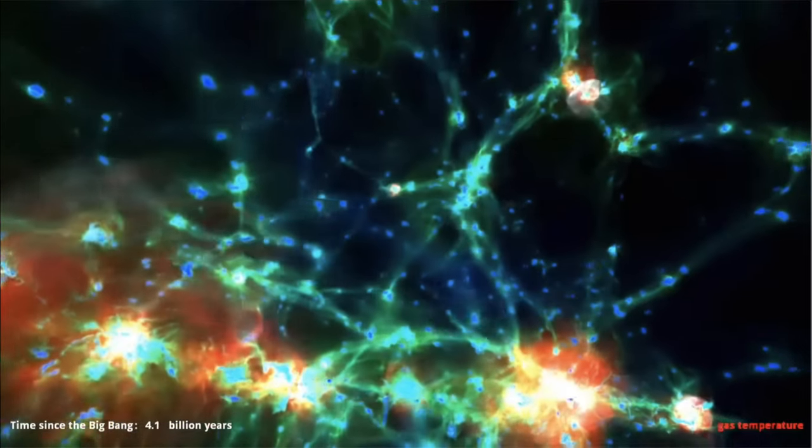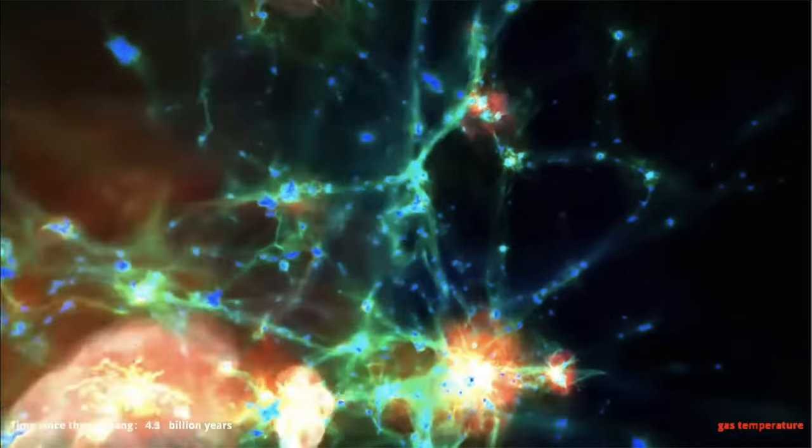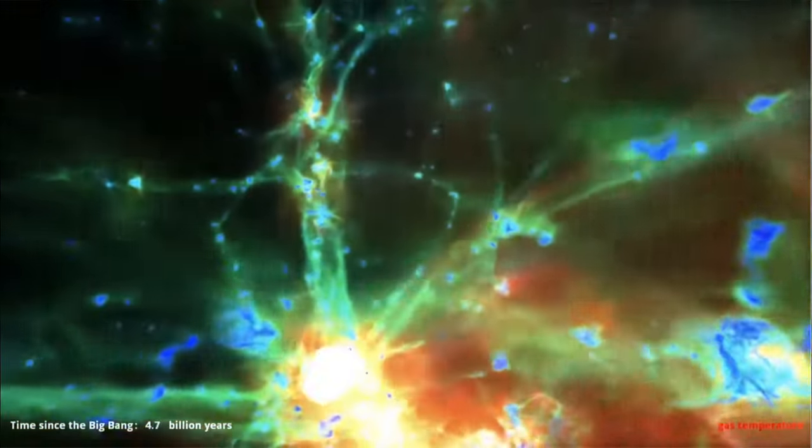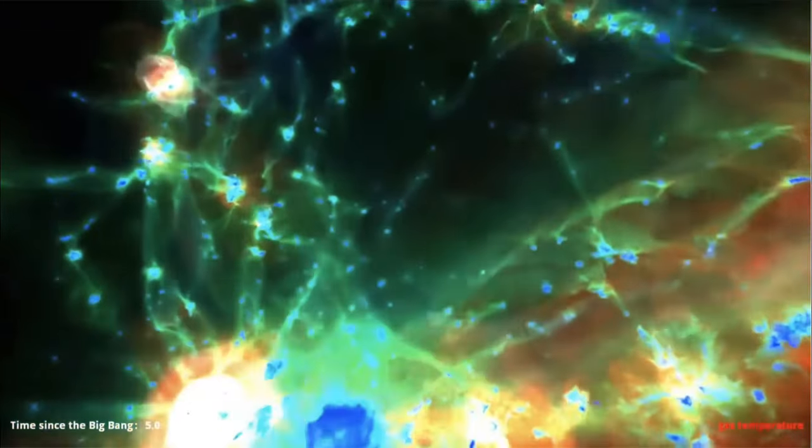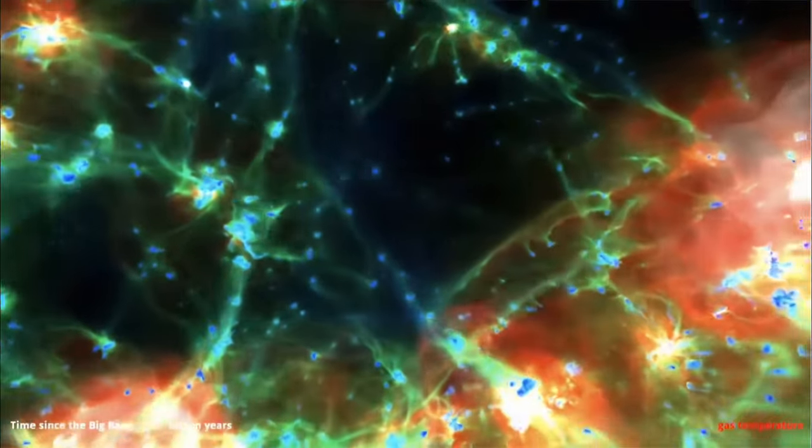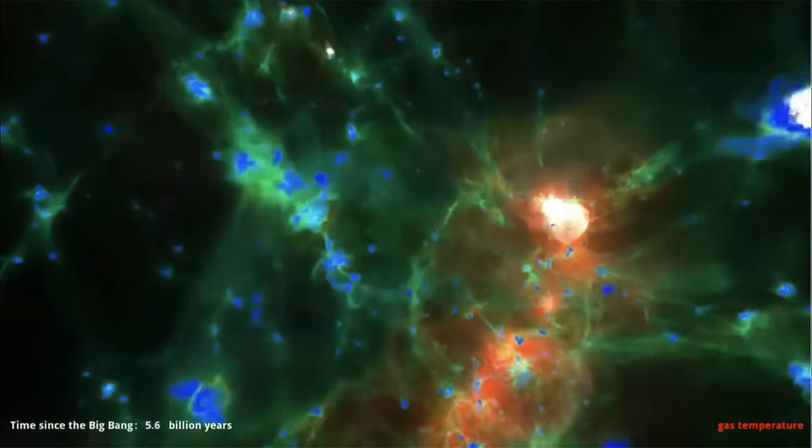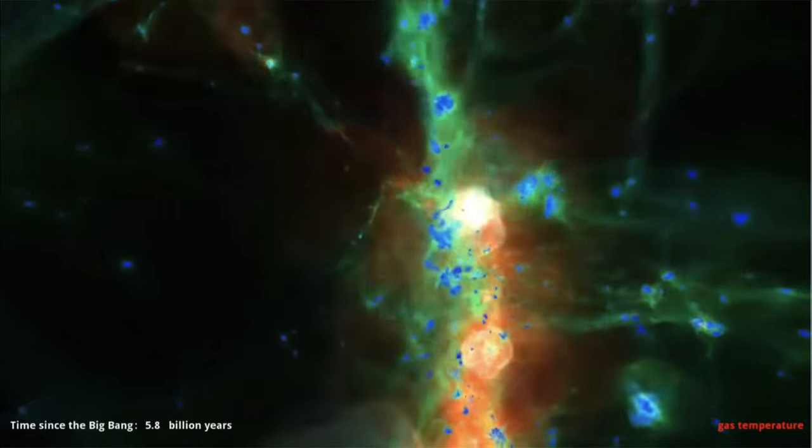You might think these are supernovae, but a supernova on the scale we're looking at would hardly be noticeable. These are actually emissions from these central black holes, supermassive black holes of galaxies expelling material outward in bursts around it.